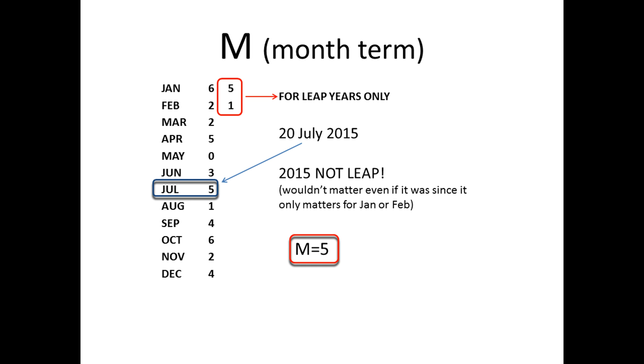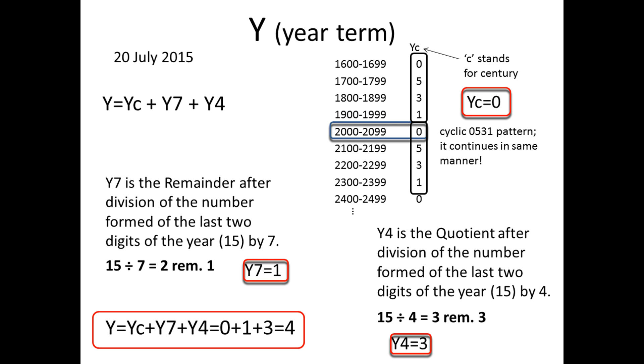The year term is also the sum of other three terms: YC, that I call the century term, Y7 and Y4. YC is shown in the upper right table, and for 2015 YC equals 0.